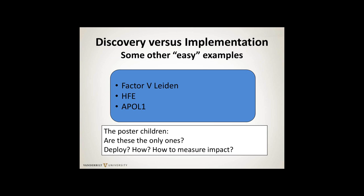There are efforts to implement interesting genetic variants in the EMR - Factor V Leiden, HFE, and ApoL1. These are the poster children for the idea that common variants may have large effect sizes in defined populations. My question is: are these really the only common variants with large effect sizes, or isn't there a place for discovery in more of these? The ApoL1 story only emerged in the last two or three years - it's a fascinating story and, of course, it's only in African-Americans.